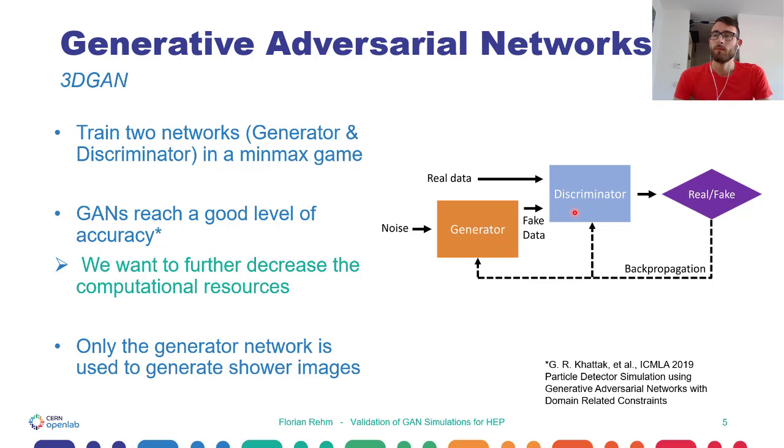The discriminator outputs a real-fake probability. The training is successful when the real-fake probability is 50-50, and therefore the discriminator is no more able to distinguish between the real data and the fake data from the generator.